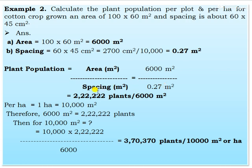The answer is 222,222 plants per 6,000 m². For per hectare: 10,000 × 222,222 ÷ 6,000 = 370,370 plants per hectare. This is the per-plot and per-hectare plant population for cotton.